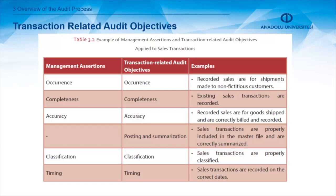Management assertion accuracy doesn't have a direct match for the next one, but the transaction-related audit objective is called posting and summarization — for example, sales transactions are properly included in the master file and are correctly summarized. Management assertion classification maps to audit objective classification — sales transactions are properly classified. Management assertion timing maps to audit objective timing — sales transactions are recorded on the correct dates.